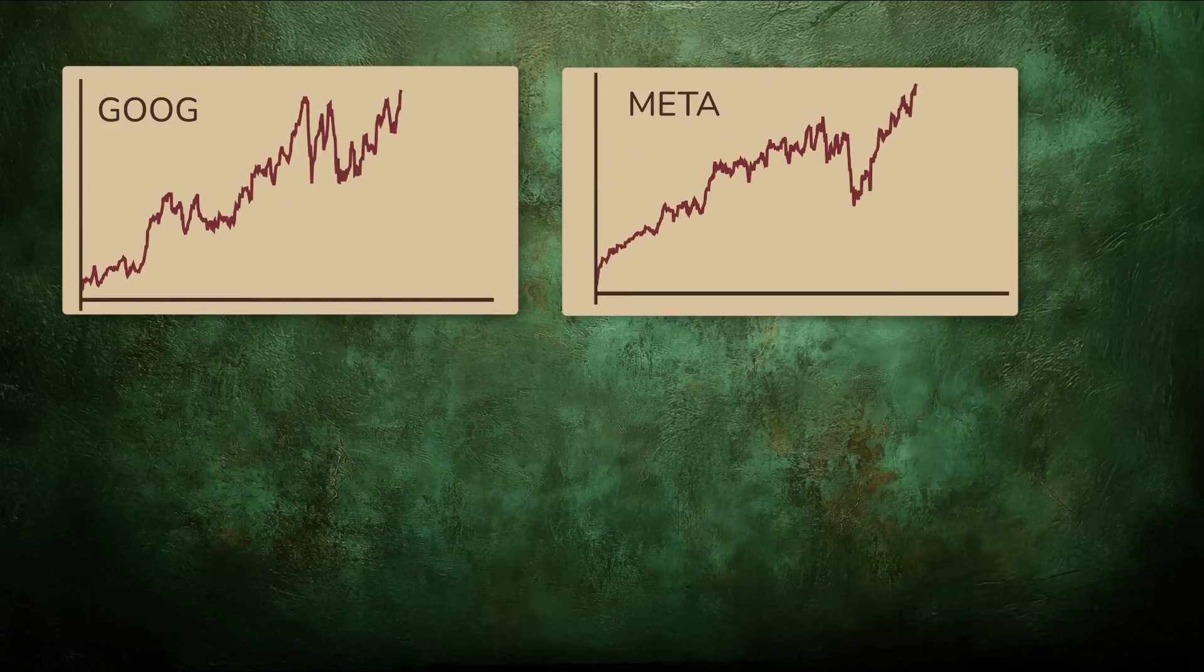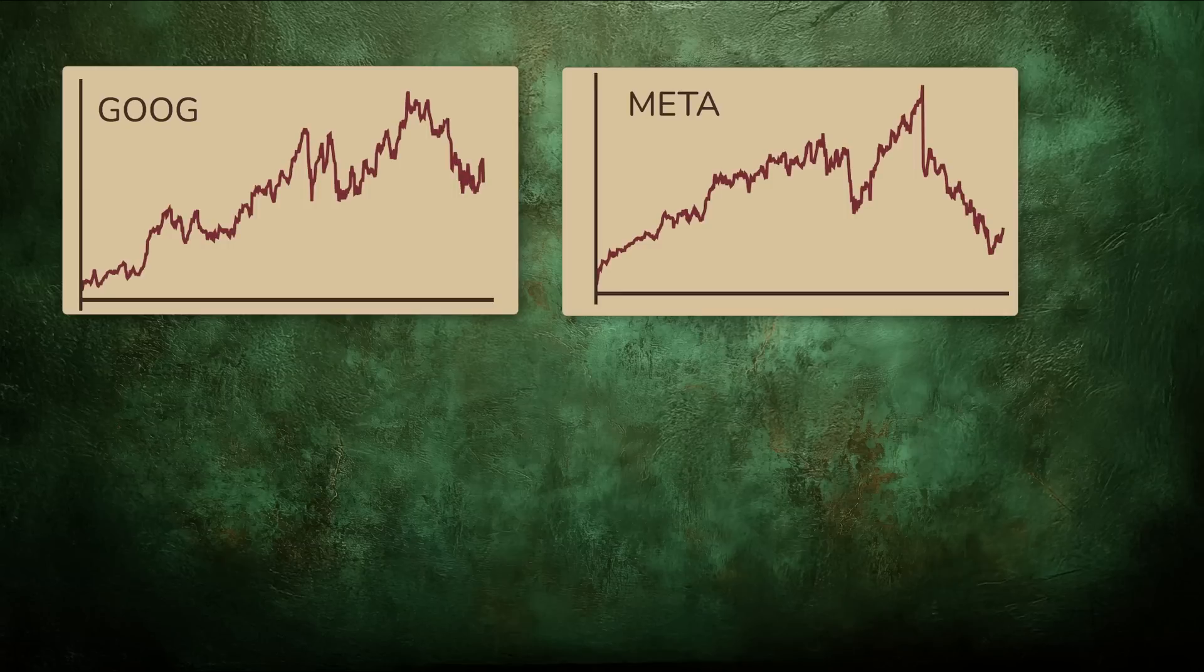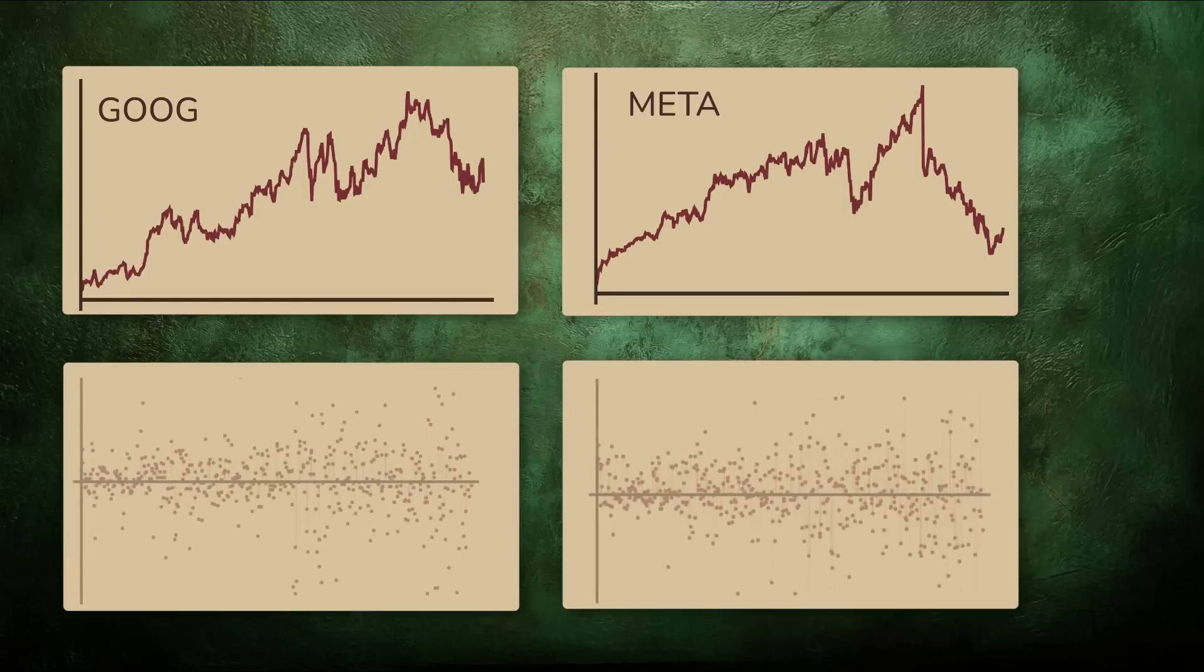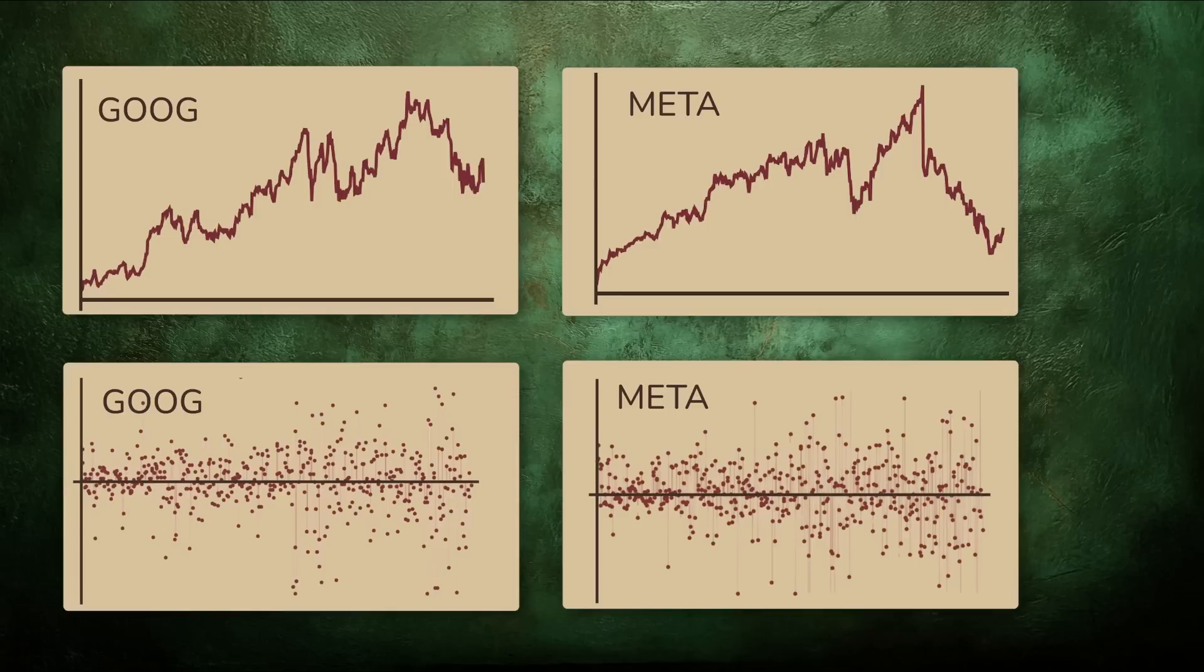Instead of focusing on the raw price of each stock, which is scale-dependent and dominated by long-term trends, analysts look at the percent change in price from one day to the next. That's called the return. So we might try graphing the daily returns for both companies. They're a bit chaotic. The patterns you saw in the price charts seem to have disappeared. Here's the real issue. These charts show how each stock moves over time. But what we actually care about is how they move with respect to each other.